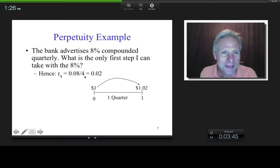So the only thing I can do with this is divide it by four, which gives me 2%. And now, what does this 2% represent? It represents the effective quarterly rate. And what does that mean? The amount of interest made from $1 after one quarter. So in other words, $1 is going to grow into $1.02 after one quarter.